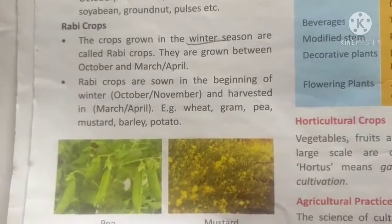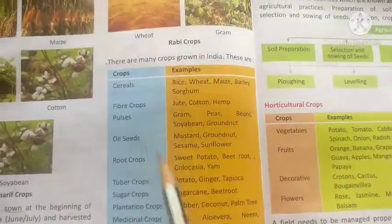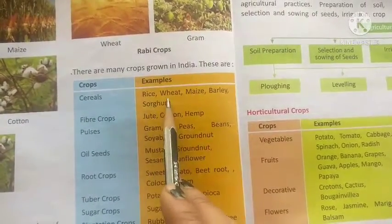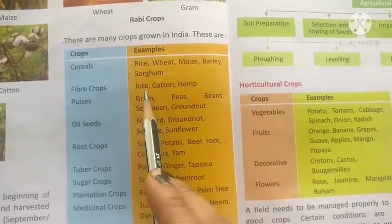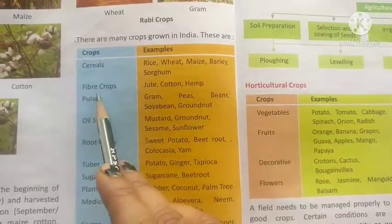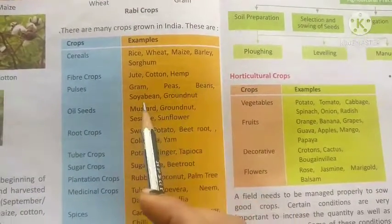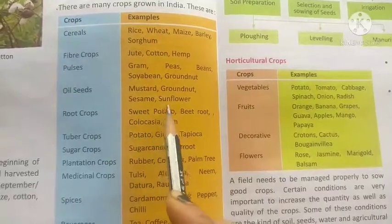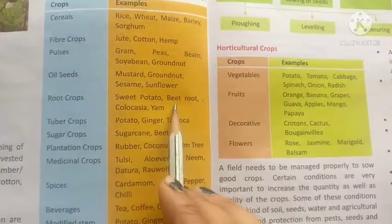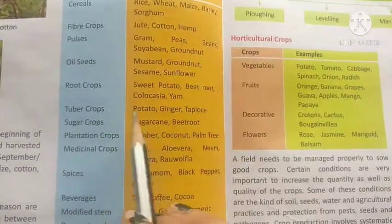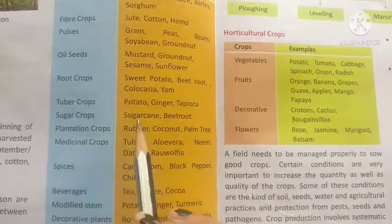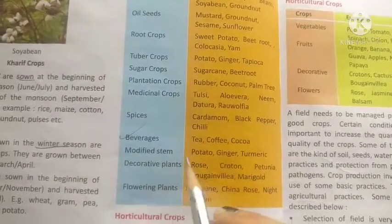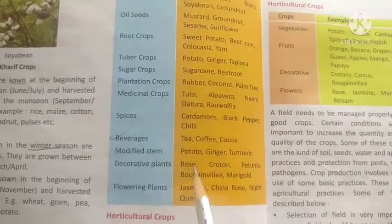A table of crop categories is provided: cereal crops include rice, wheat, maize, barley, and sorghum; fiber crops include jute, cotton, and hemp; pulses include gram, peas, beans, soybean, and groundnut; oilseeds include mustard, groundnut, sesame, and sunflower; root crops include sweet potatoes, beetroot, and yam; sugar crops include sugarcane and beetroot; spices include cardamom, black pepper, and chilies; beverages include tea, coffee, and cocoa; modified stem crops include potatoes, ginger, and turmeric.